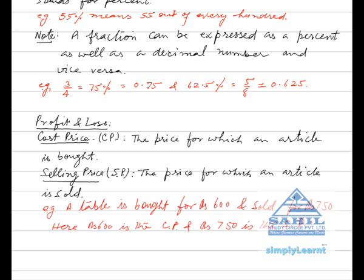For example, a table is bought for Rs.600 and sold for Rs.750. Here Rs.600 is the CP and Rs.750 is the SP.